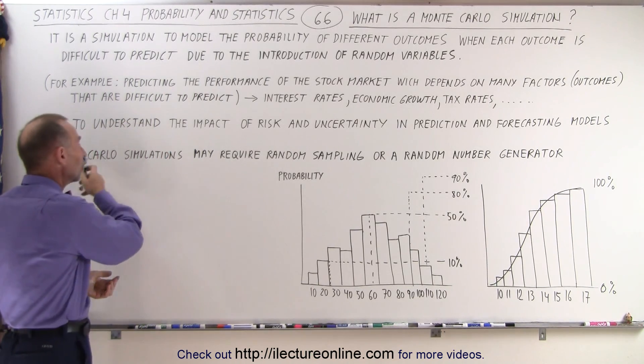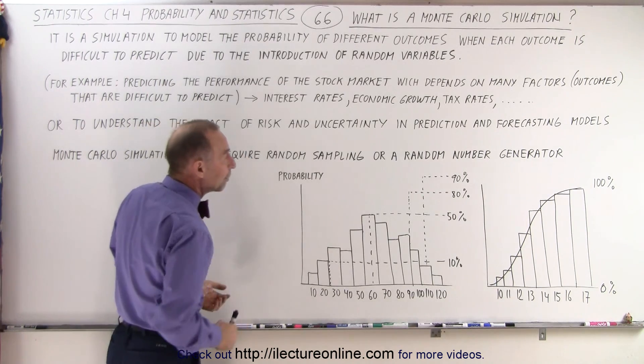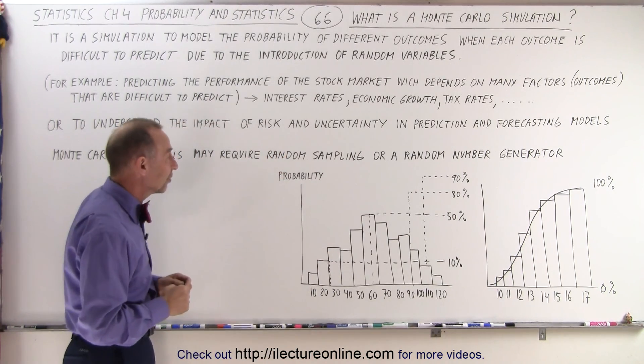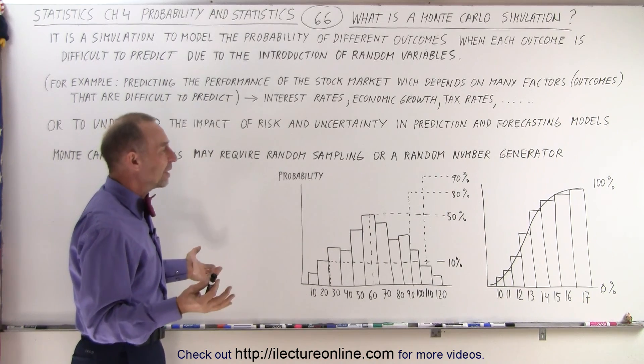So, a Monte Carlo simulation may require random sampling or random number generators and so that's typically the case. So, what does that look like graphically?